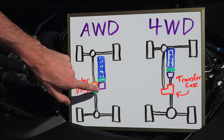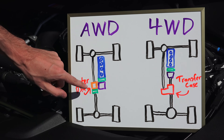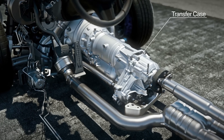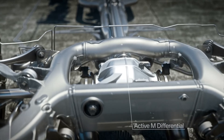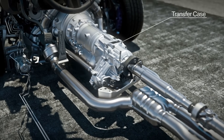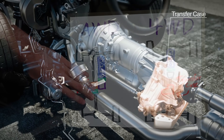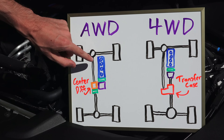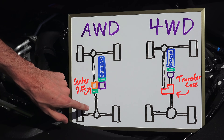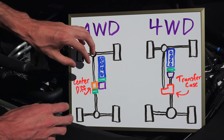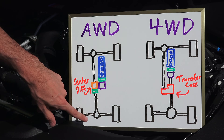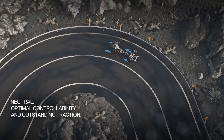In an all-wheel drive vehicle, from the transmission it goes to a center differential. In a four-wheel drive vehicle, it goes to a selectable transfer case — going inside this transfer case and then passing directly to the rear differential. If you put it in four-wheel drive, it will also send power to the front differential.